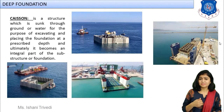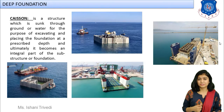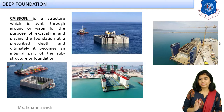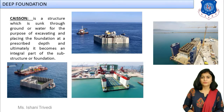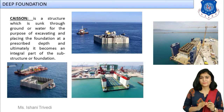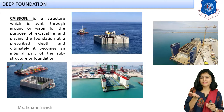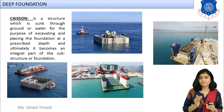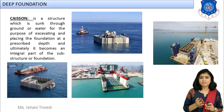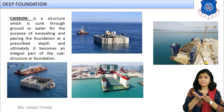First let us try to understand what a caisson is. Imagine that we are making a box-like structure with four sides. The four sides of the box are made with RCC — reinforced cement concrete. Next, a base is made. It is kept open at the top, and this box-like structure having huge dimensions is prepared on the precast yard.